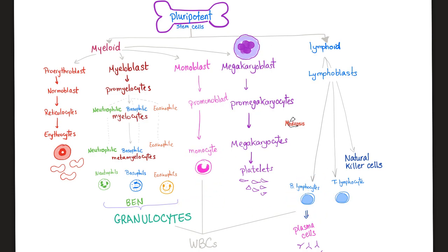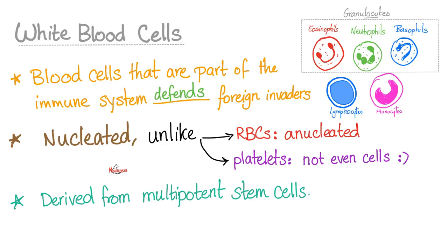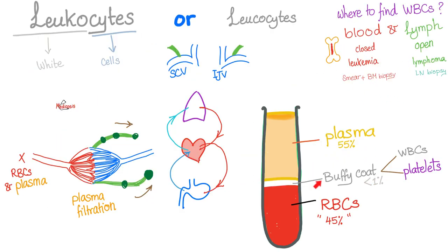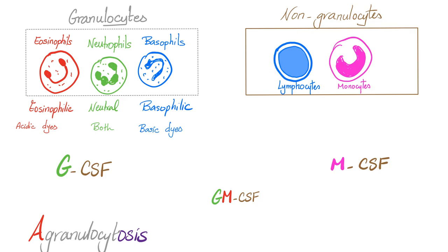Monocytes and lymphocytes do not have granules. That's why we call them agranulocytes or non-granulocytes. All of your white blood cells come from myeloid lineage, except lymphocytes, which come from lymphoid lineage. Unlike your red blood cells, your white blood cells actually have a nucleus. The function of white blood cells is to defend your body against foreign invaders. You find them in the buffy coat. We can boost granulocyte formation with granulocyte colony-stimulating factor, monocyte production with monocyte colony-stimulating factor, or both with granulocyte-monocyte colony-stimulating factor.